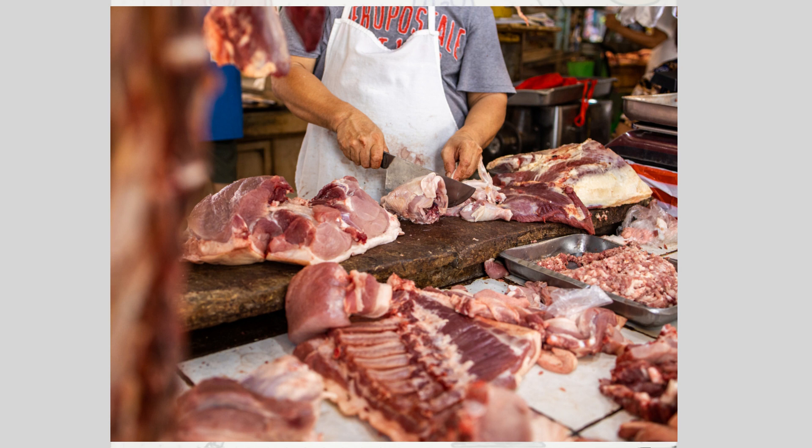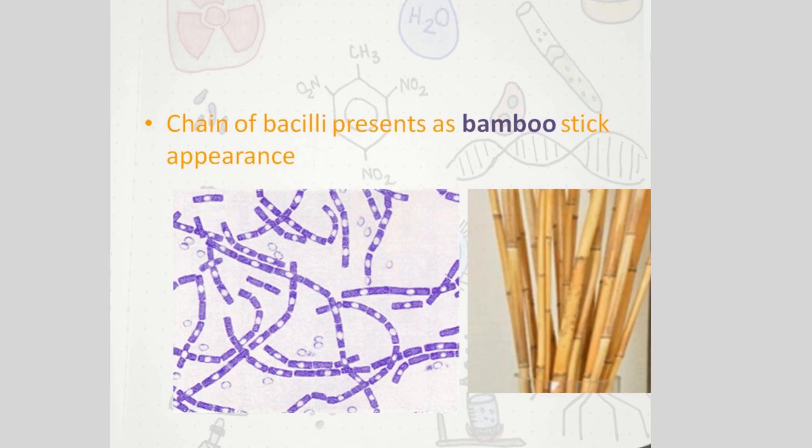People who work in an abattoir or a slaughterhouse usually get this. Now this bacilli looks like bamboo sticks on gram staining.